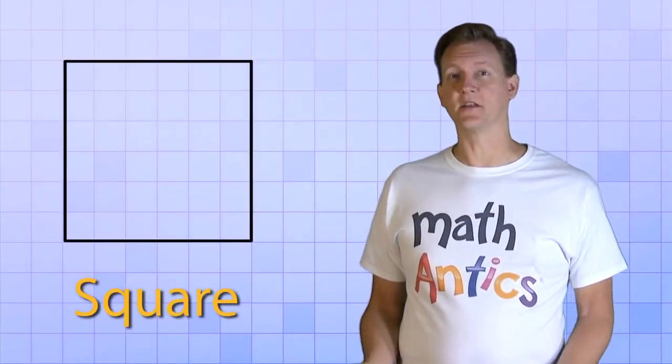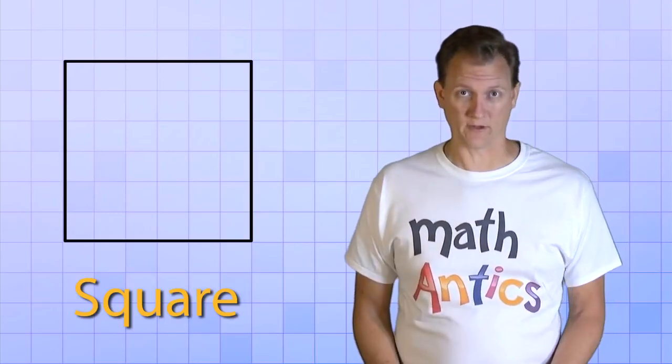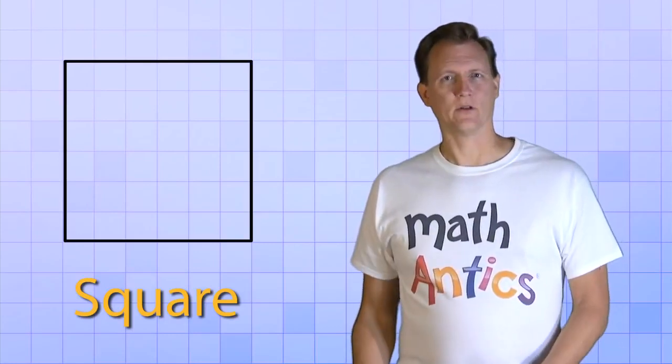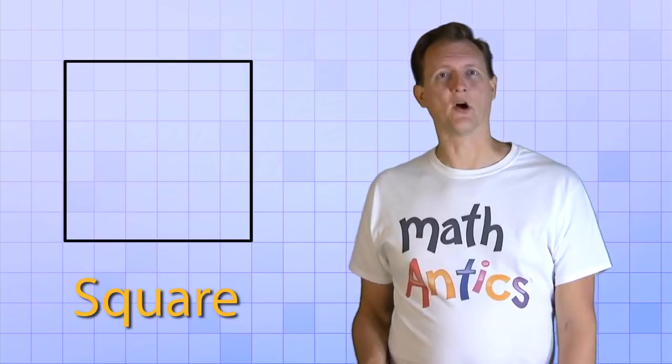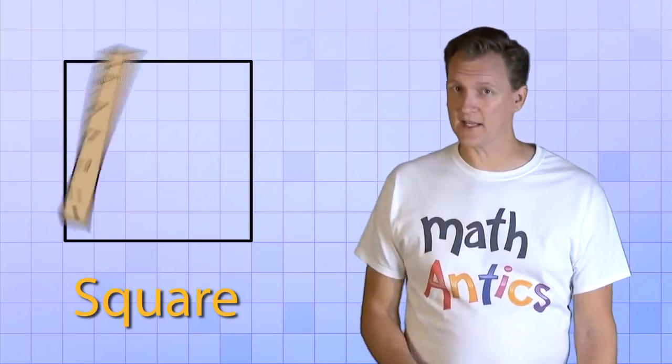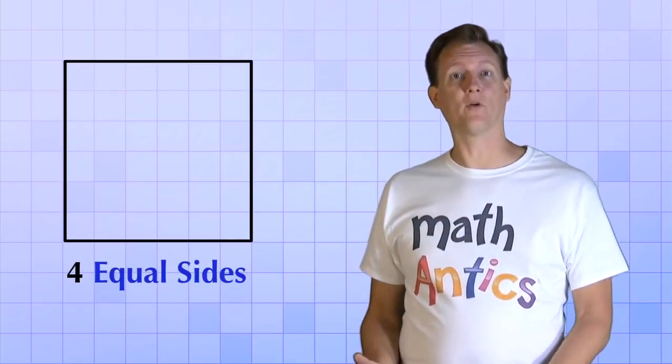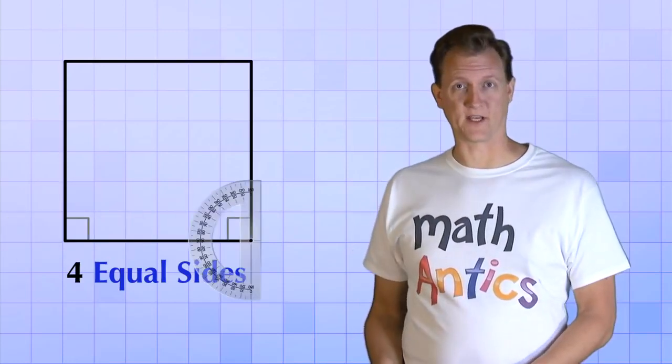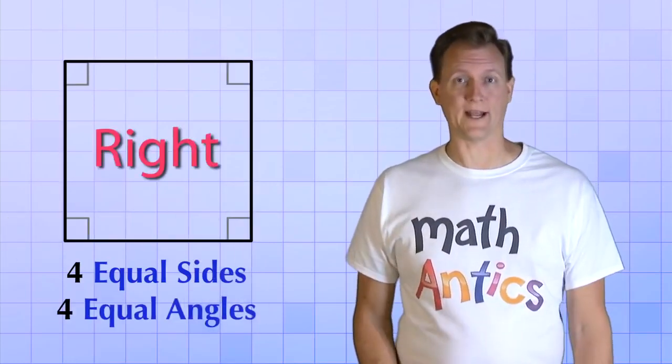And a square is a special kind of quadrilateral. It's a quadrilateral because it has four sides. And it's special because all four of those sides are exactly the same length, and all four of its angles are exactly the same size. In fact, they're all right angles.